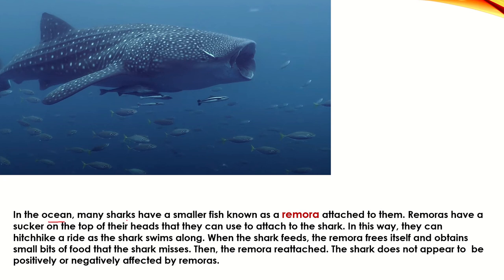In the ocean, many sharks have a smaller fish known as remora attached to them. Remoras have a sucker on the top of their heads that they use to attach to the shark. In this way, they hitchhike and ride as the shark swims along. When the shark feeds, the remora frees itself and obtains small bits of food that the shark misses. The shark is not negatively affected by the remoras.